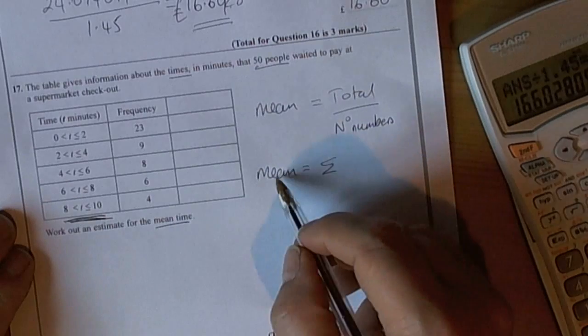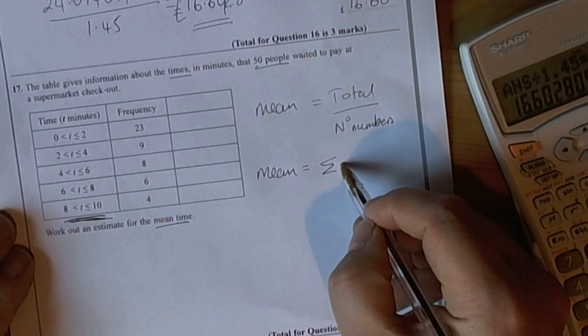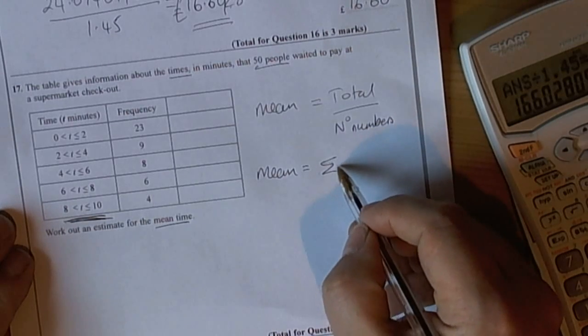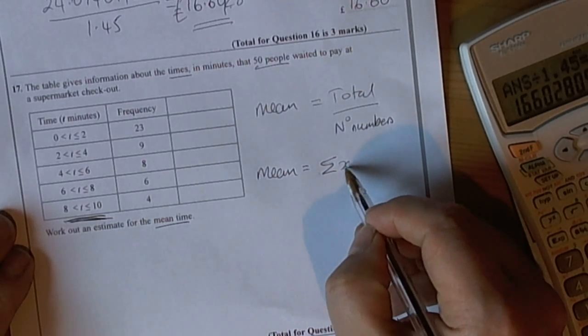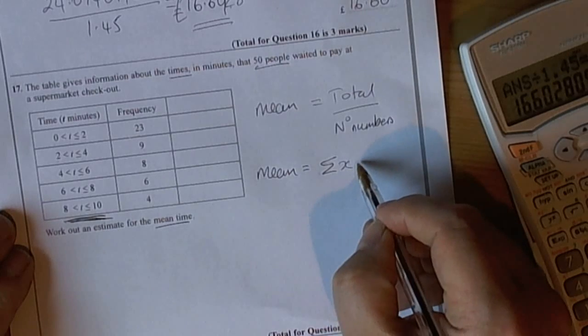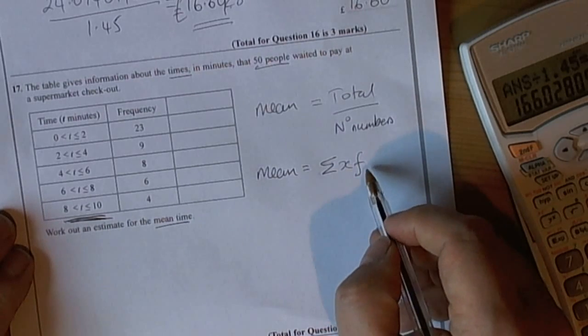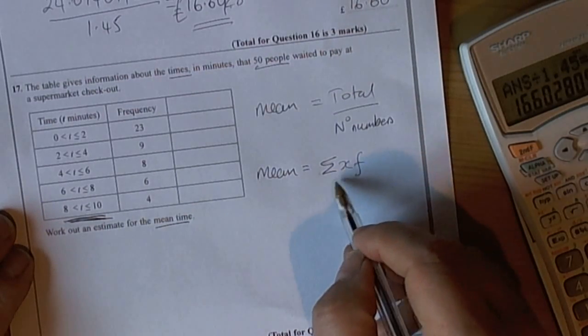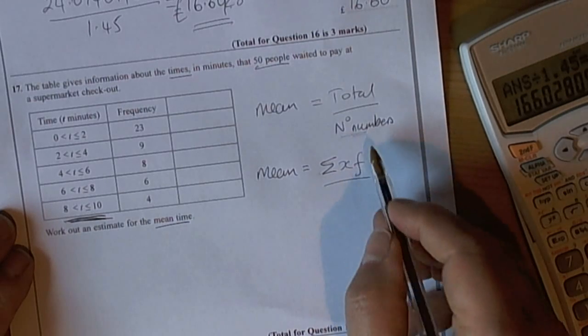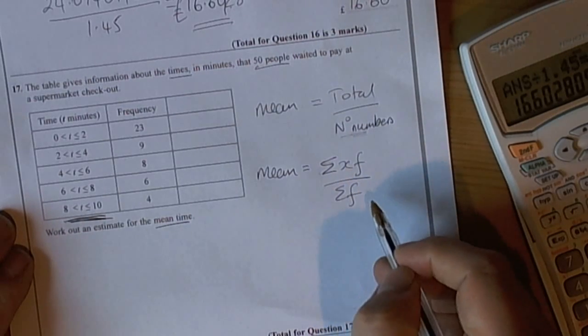Because it's grouped data, the formula for calculating the mean average is the total (this funny symbol just means total) of the variable, which in this case is time, times the frequency of each interval. And you divide that by the number of numbers, which we call the sum of the frequencies.